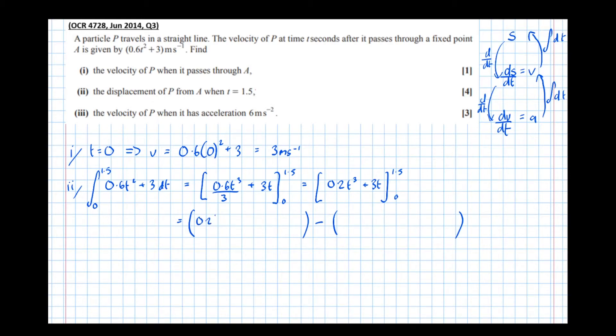So 0.2 times 1.5 cubed plus 3 lots of 1.5, take 0.2 times 0 cubed plus 3 lots of 0. It's obvious that that's going to be 0, but we should always write this down so that the examiner knows that you've acknowledged that there's two limits to this integration. So to get the mark you need to show 0 being subbed in.